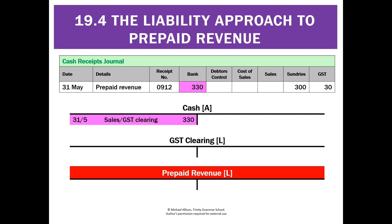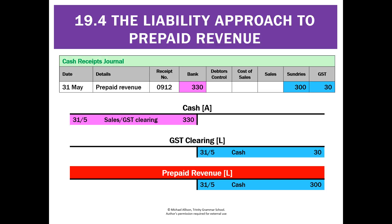When posting, we post our $330 from the bank column as increased cash — that would be a debit. We've got $300 in the sundries column for prepaid revenue, which is a liability, so liabilities go up on the credit side. And then we've got our $30 GST, which increases our GST liability — so that would also be a credit. So we've got one debit matching up with two credits.